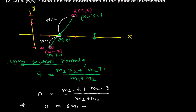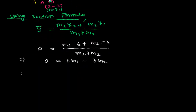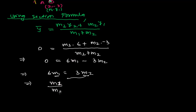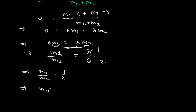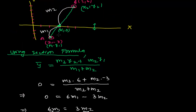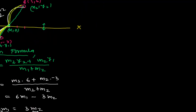Since the denominator doesn't affect the zero, we get 6m1 - 3m2 = 0, which gives 6m1 = 3m2, so m1/m2 = 3/6 = 1/2. Therefore the ratio m1 : m2 = 1 : 2. So the x-axis divides the line segment joining (2, -3) and (5, 6) in the ratio 1 : 2.